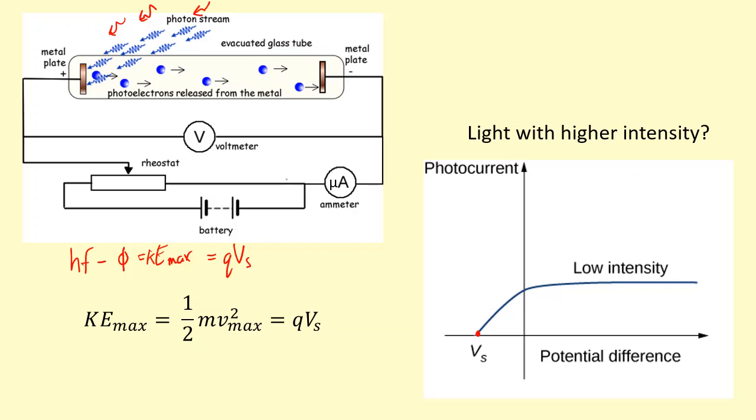But what you have is more electrons being released because there are more photons, and there's one-to-one interaction with the photons and electrons. So we'll get more electrons being released, which will result in a higher current being produced.